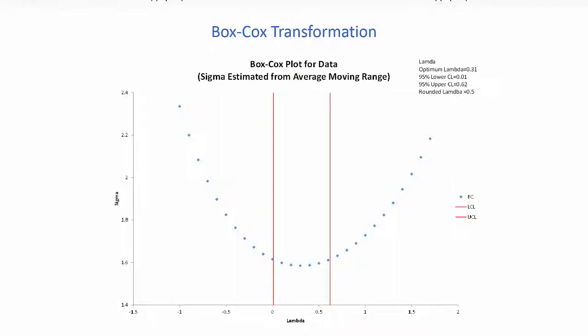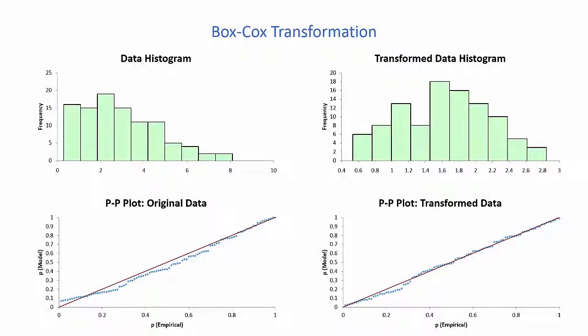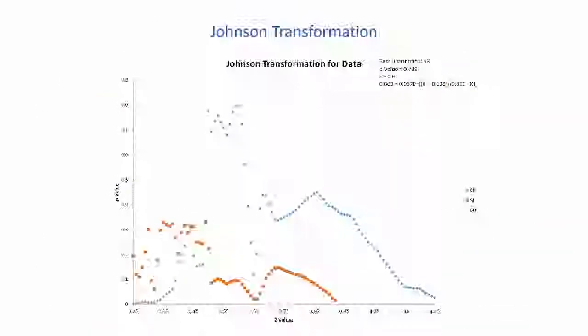Transform the data to a normal distribution using the Box-Cox transformation. Compare the data before and after the transformation. Same with the Johnson transformation.